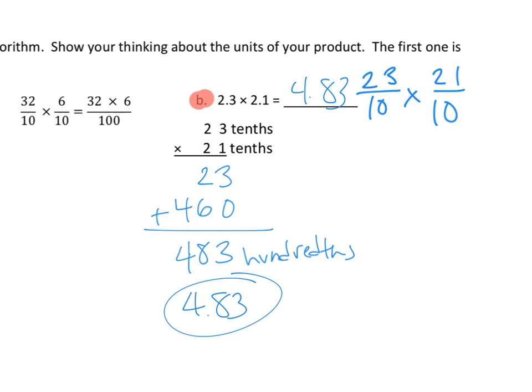I'm going to use my estimating strategy to point out: this is a little more than 2 times something a little more than 2. So we'd guess our answer would be a little more than 2 times 2 — a little more than 4. And guess what? A little more than 4. We are rocking it tonight.